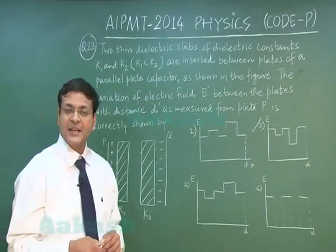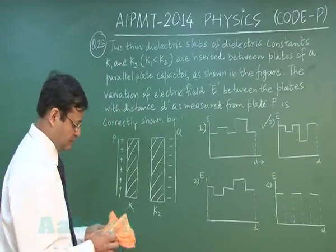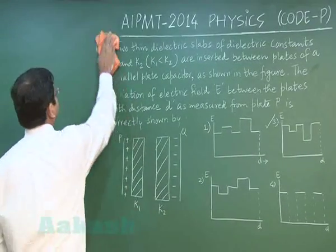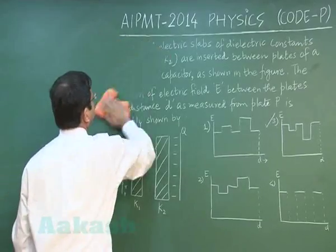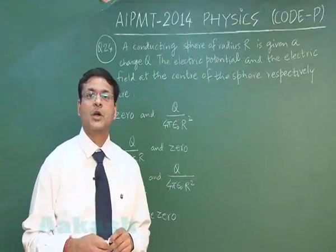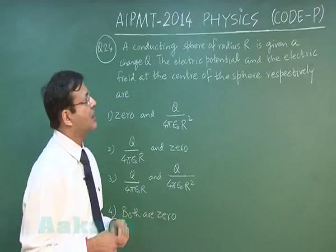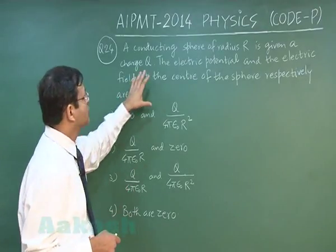Now let us discuss the next question, that is question 24. In next question, that is question 24, it reads: a conducting sphere of radius r is given a charge q. This is a question of electrostatic and very easy one, very straightforward, direct formula based.